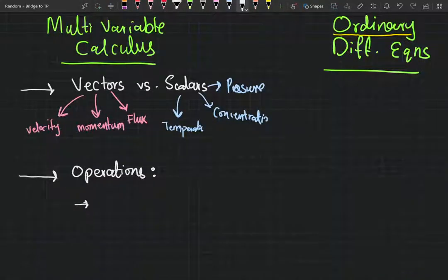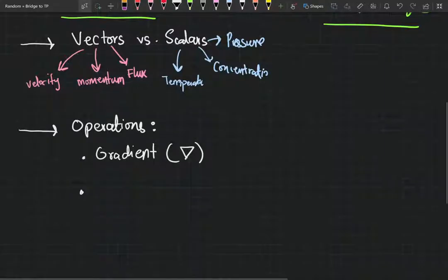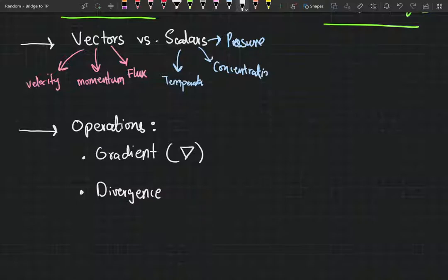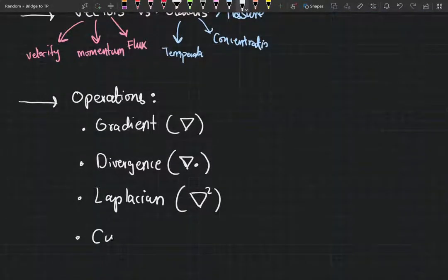Those operations include gradient, which is the first one. I'm assuming that you guys understand what partial derivatives are. Gradient is usually represented as del. Then we have divergence, del dot. There is Laplacian, which is going to be del squared. There's curl, which is going to be del cross.